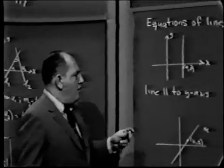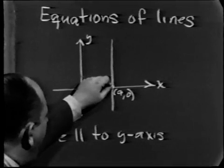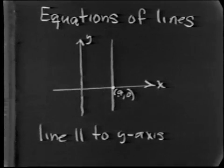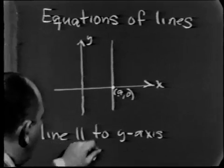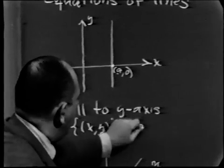There are two possibilities. The first possibility is that the line is parallel to the y-axis. If the line is parallel to the y-axis, if the line goes through the point, notice that the only criteria for the point to be on that line is that its x-coordinate equal a.